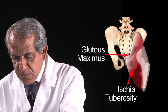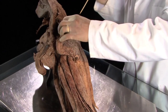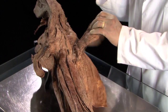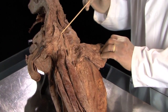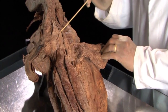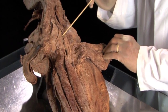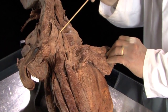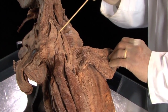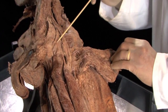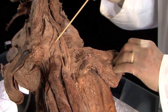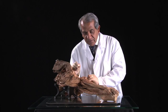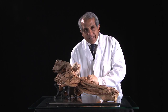I'm going to move the gluteus maximus away to reveal the ischial tuberosity. And you can see, arising from the ischial tuberosity, are these multiple tendons, which lower down give rise to muscle fibres.